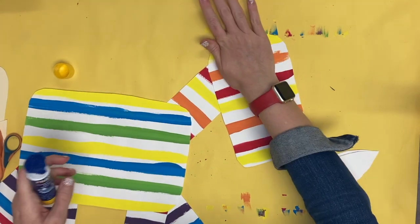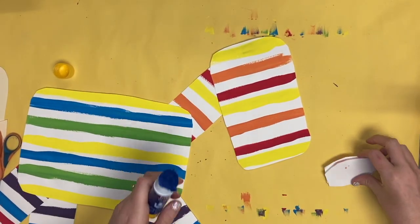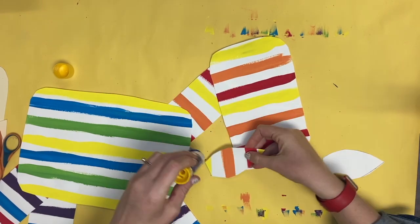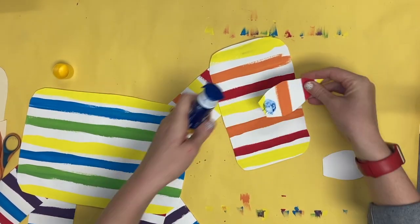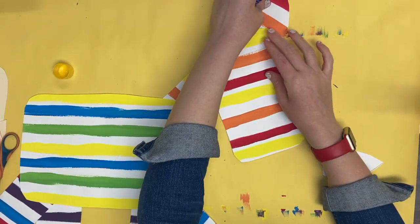I want my zebra to kind of be looking straight ahead slightly down. So I'm going to make sure the head goes on at the right angle so it looks like he's looking in the right direction.